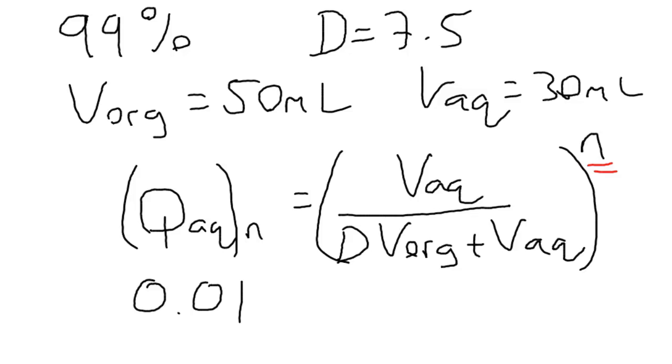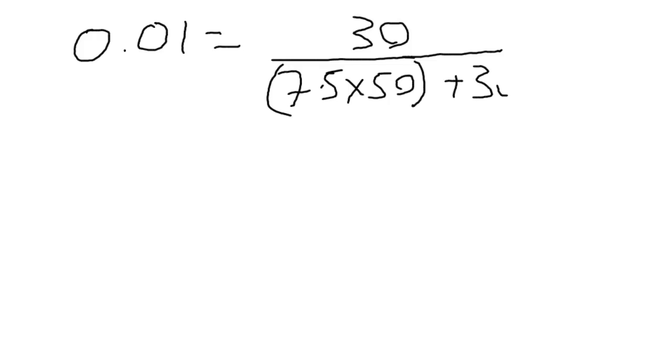So we know that, we know all the other volumes and the distribution ratio, so we can plug our numbers in. So let's do that, and we'll end up with 0.01 equals the volume of the aqueous phase, which we said was 30, divided by the distribution ratio multiplied by the volume of the organic phase plus the volume of the aqueous phase, all to the power n.